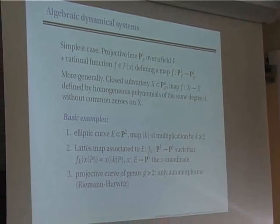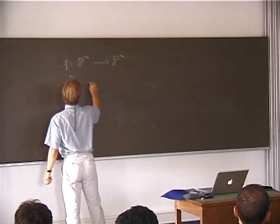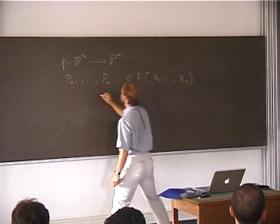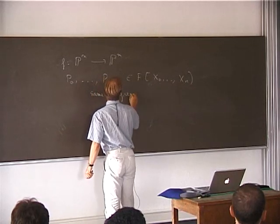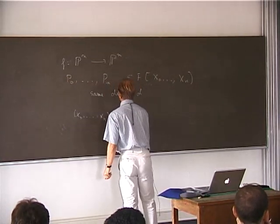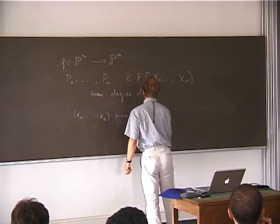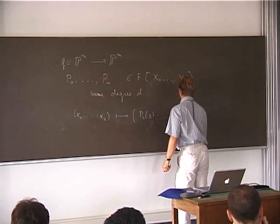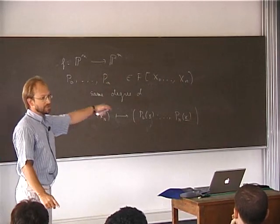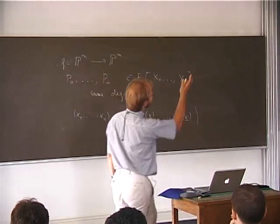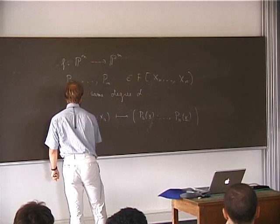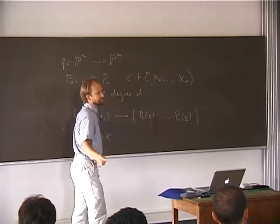To define f from P^n to P^n, I take polynomials P_0 through P_n of the same degree d, and then there is a map which sends the point of homogeneous coordinates x_0,...,x_n to the point of homogeneous coordinates P_0(x),...,P_n(x). This is only defined outside the locus where the polynomials P_0,...,P_n simultaneously vanish. If I assume there are no common zeros on X, then this defines a map from X to X.